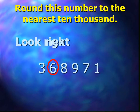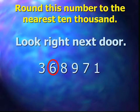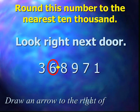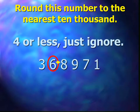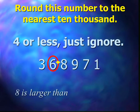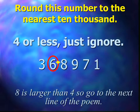Once you have circled the digit, look right next door. Draw an arrow to the right of the digit. In this case, you are going to be looking at the thousands place. Is that digit four or less? If it is, just ignore it. But eight is larger than four, so go to the next line of the poem.